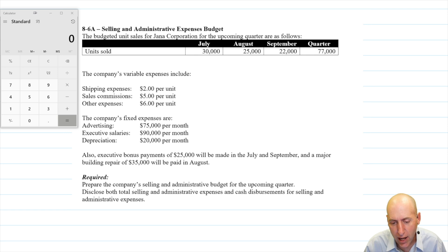The budgeted unit sales for Janna Corporation for the upcoming quarter are as follows, and there's our unit sales. The company's variable expenses include shipping, sales commissions, and other. The company's fixed expenses include advertising, executive salaries, and depreciation.